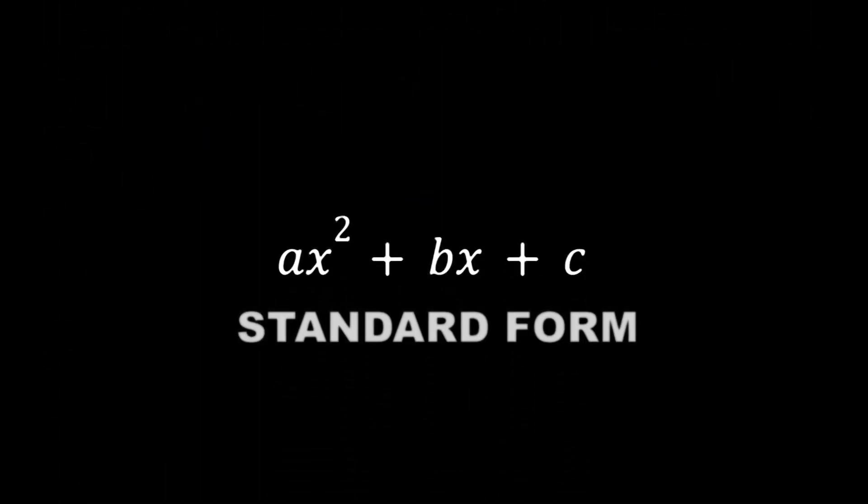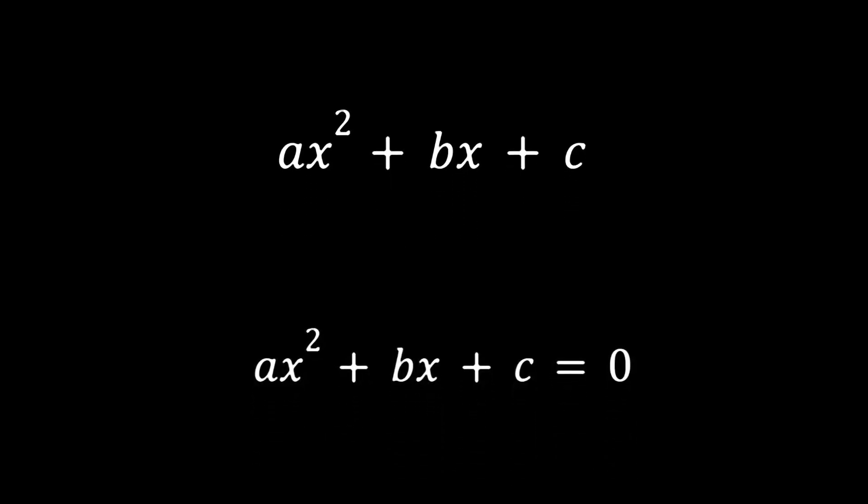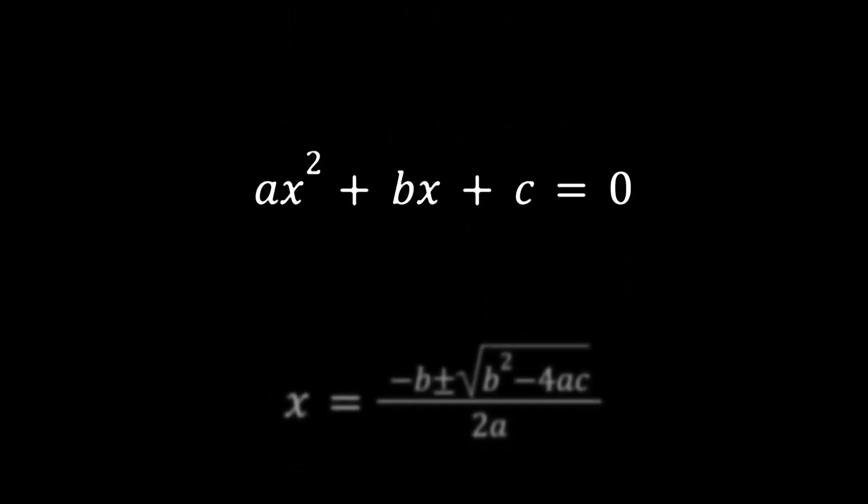Start with standard form. The x-intercepts occur where the parabola equals zero. Solving for x gives you the quadratic formula.